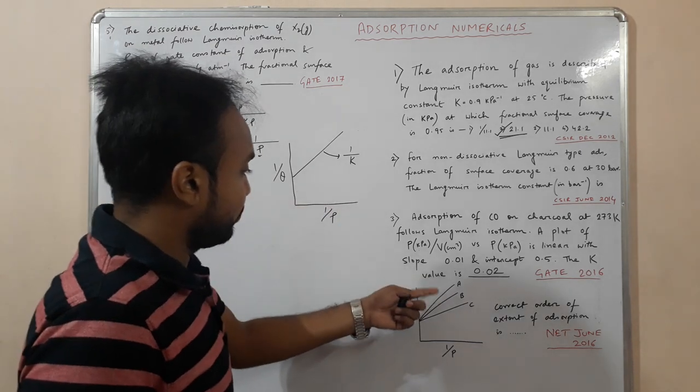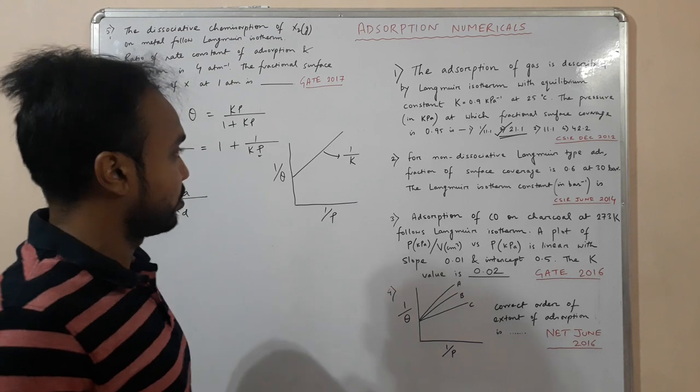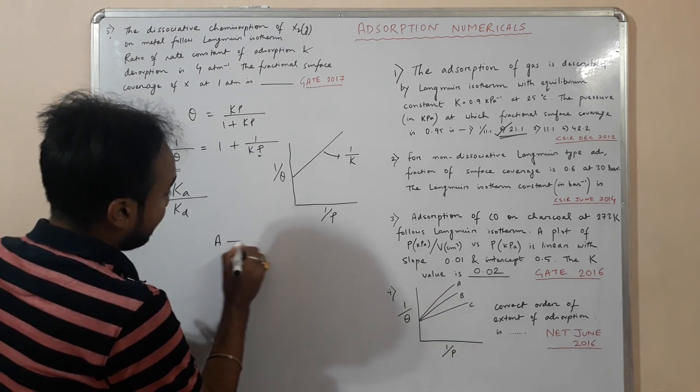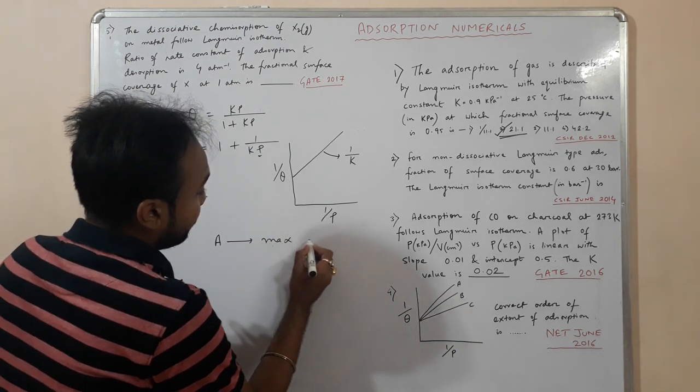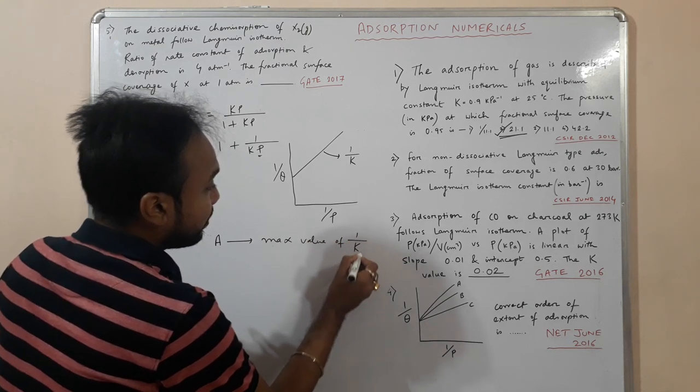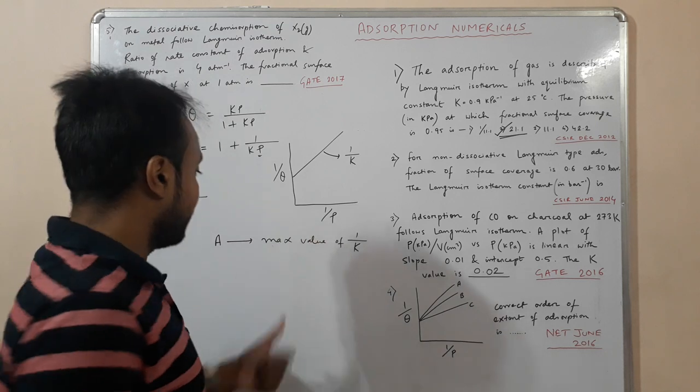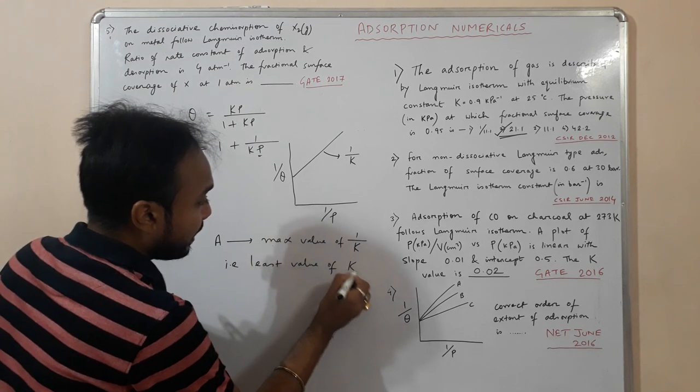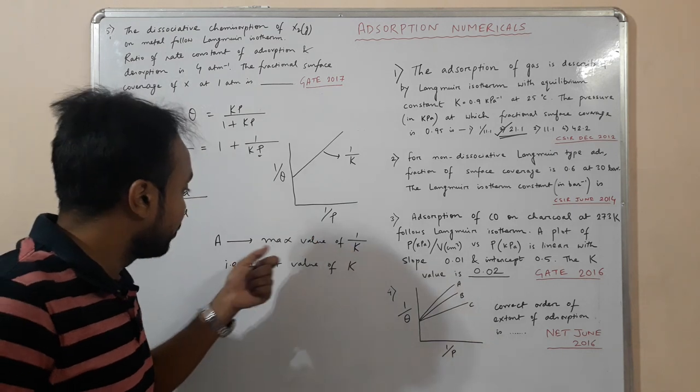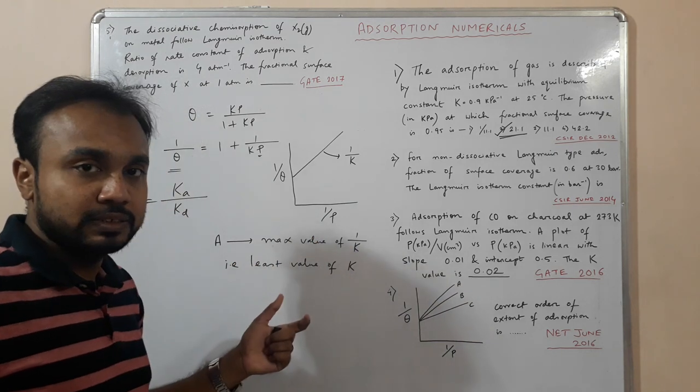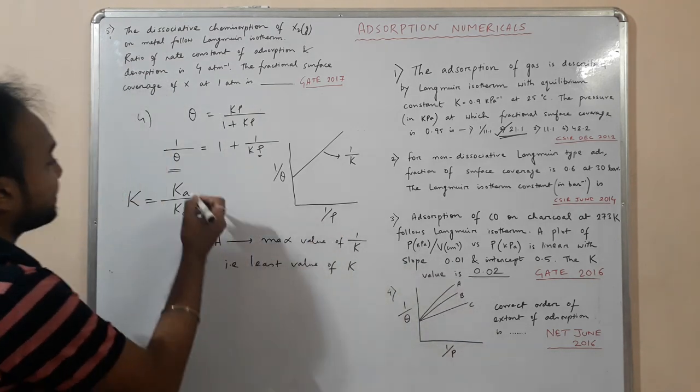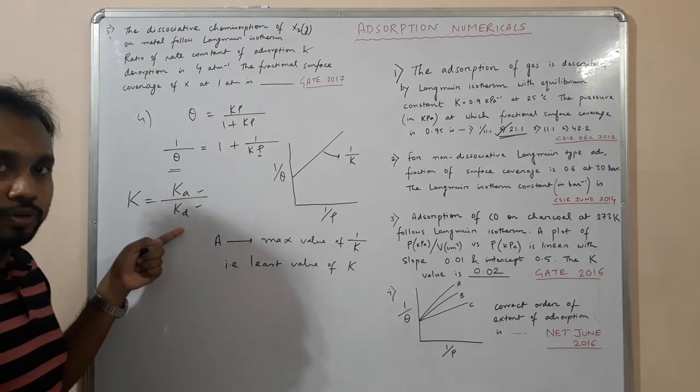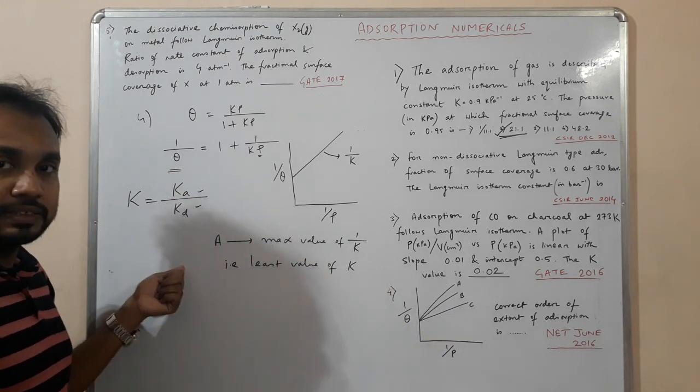Here the slope of A is more. For this plot, the slope of A is more. That means the value of 1 by K is more for A. So A has maximum value of 1 by K, that means least value of K. Since the 1 by K value is maximum for A, so A's K value is less. And what is K? K is basically adsorption by desorption. So if K value is less, that means K desorption is more, so the extent of adsorption for A is the least.